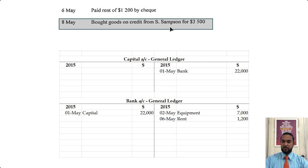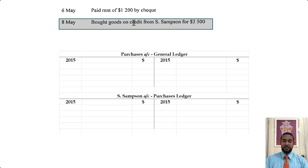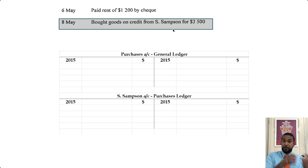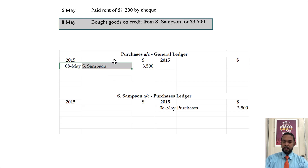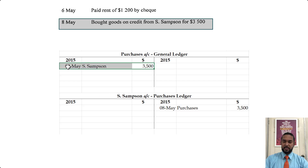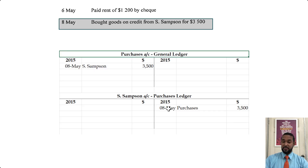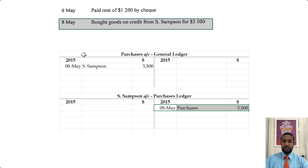On the 8th of May, we bought goods on credit from S. Samson for $3,500. We're going to debit purchases because goods are going to purchases, and credit Samson because value came from Samson. One common issue is people think that because Samson appears on the debit side of the purchases account, they've debited Samson — no. This is a debit in the purchases account, just as this is a credit in the Samson account. Credit where it's coming from, debit where it's going.